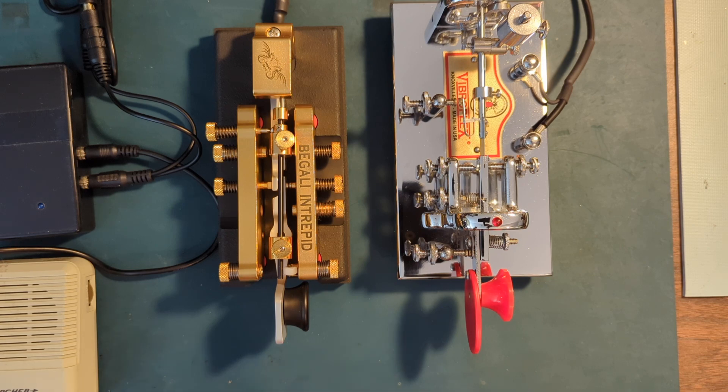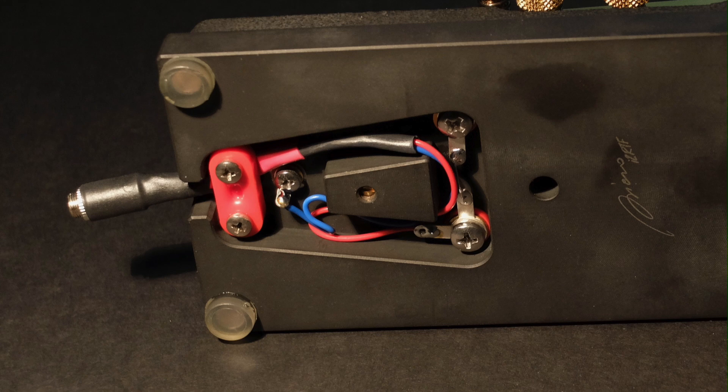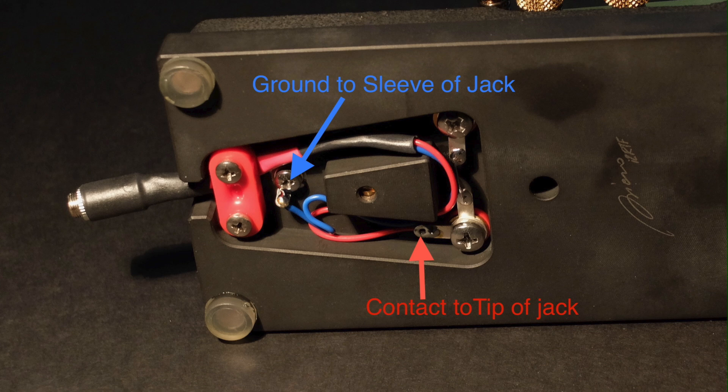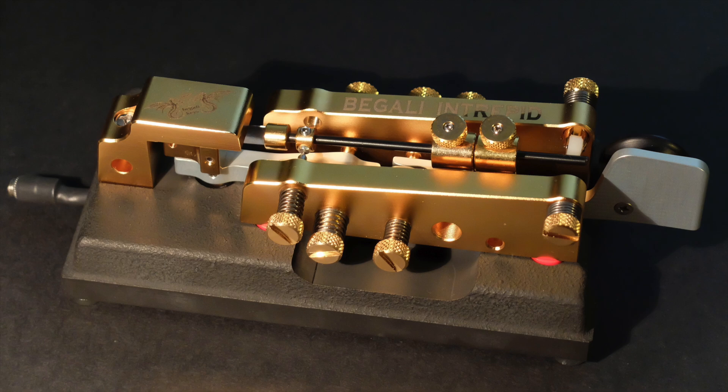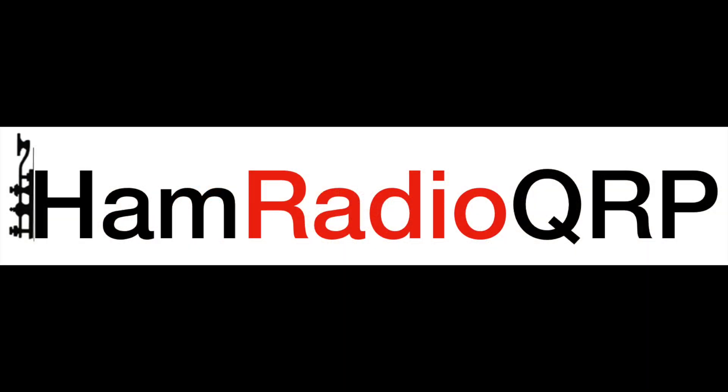The Begali Intrepid arrives with a 1/8 inch tip ring sleeve male-to-male cable, but there's no jack on the Intrepid to connect the cable to. Begali leaves it up to the operator to decide how to wire the cable. Under the bug you'll find two terminals for soldering your connections. I constructed a 1/8 inch jack from parts and use shrink wrap tubing to form the stress relief to the jack. The ground or sleeve of your cable should be connected to the rear terminal, and depending on your radio you solder either the tip alone or tip and ring to the other terminal. If you order one from Begali, be aware that you'll need to do this prior to using the key. The Begali Intrepid is an amazing key and I hope everyone gets a chance to try one someday if they wish to. Thanks for watching Ham Radio QRP.